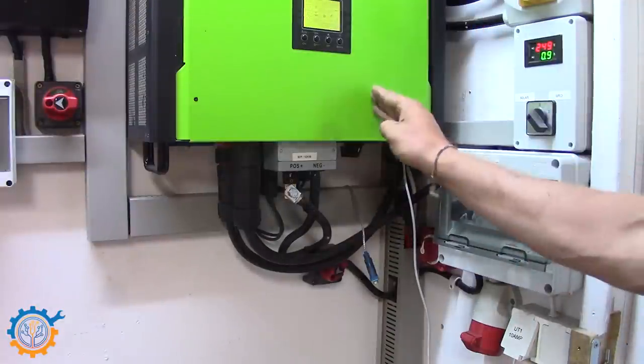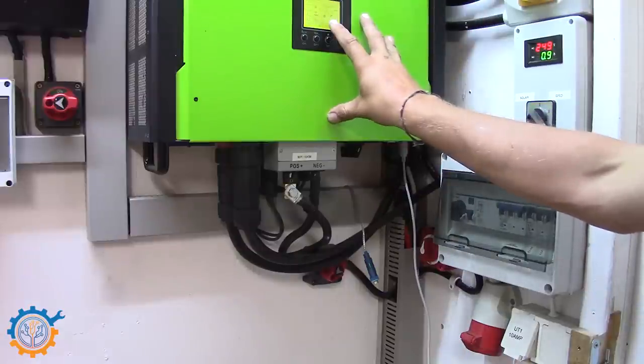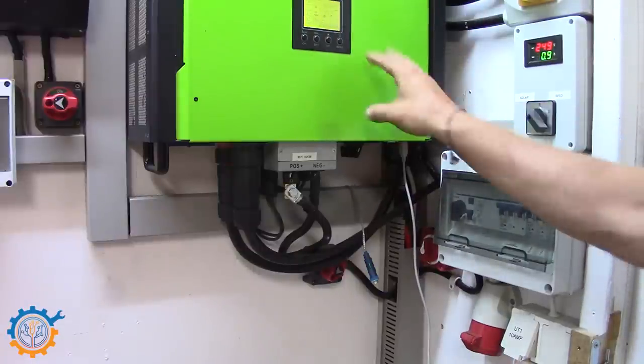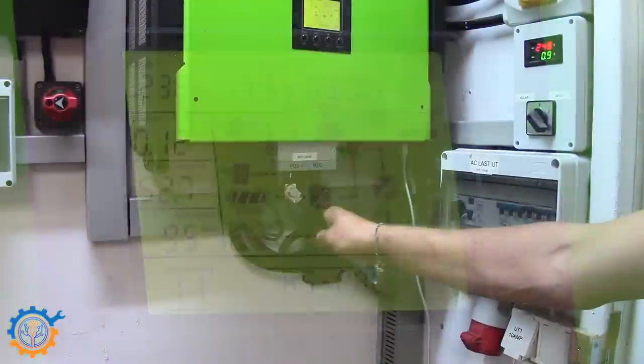So what we have here is my 10 kilowatt inverter and I'm currently pushing around 60 amps, going up and down to around 100 amps from the battery. The current situation is that I don't have much solar at all, we're talking about a couple hundred watts.